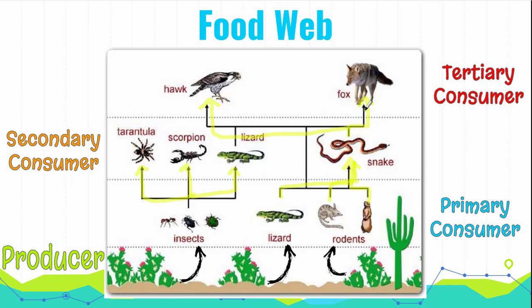Notice how with a food web, the rules are still the same. When we have an arrow, it means eaten by, and it's the transfer of energy and matter. When you eat something, you get the energy from it and you get the pieces of it, the matter.